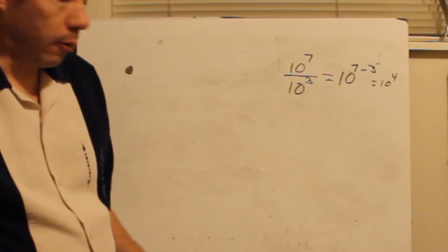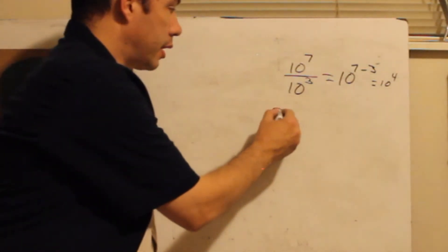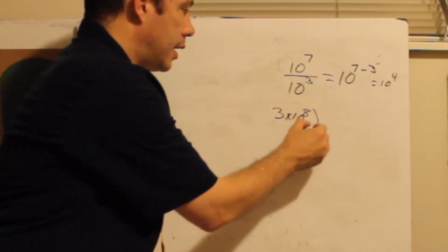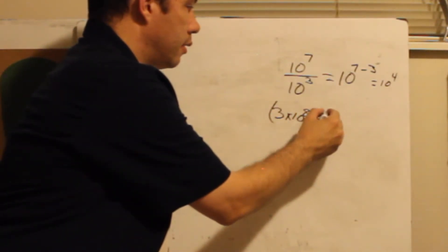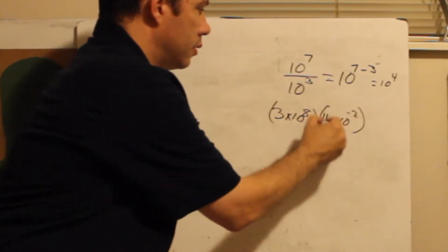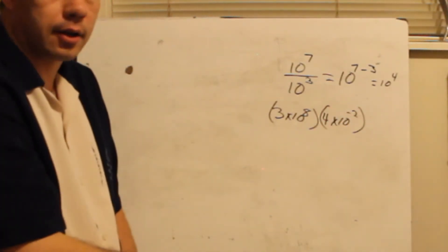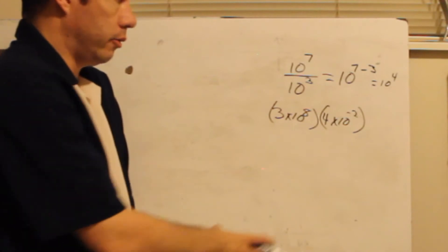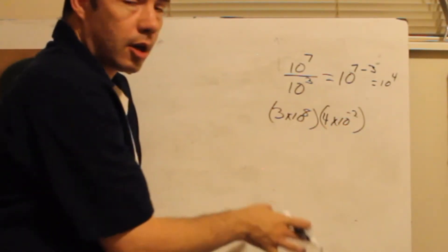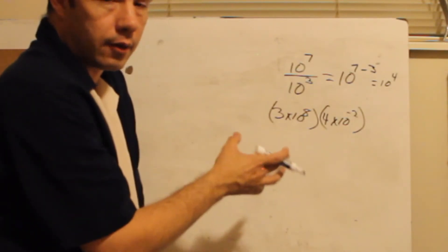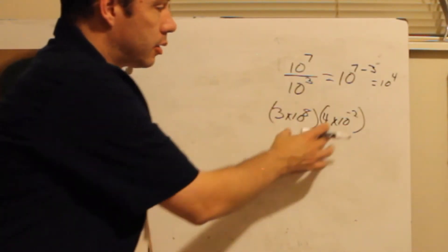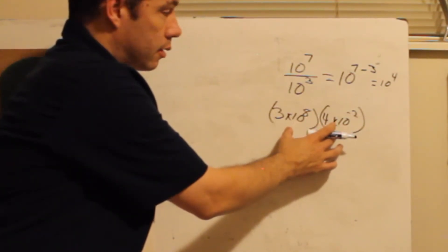Let's apply this how we're going to see it though. We're going to see numbers like 3 times 10 to the 8th times 4 times 10 to the negative 2, and we're going to have to calculate that out. Now, yes, your graphing calculator can do this, but we're going to be getting into some numbers that graphing calculators, even the more powerful ones, don't necessarily like. So that's why we're doing this manually.